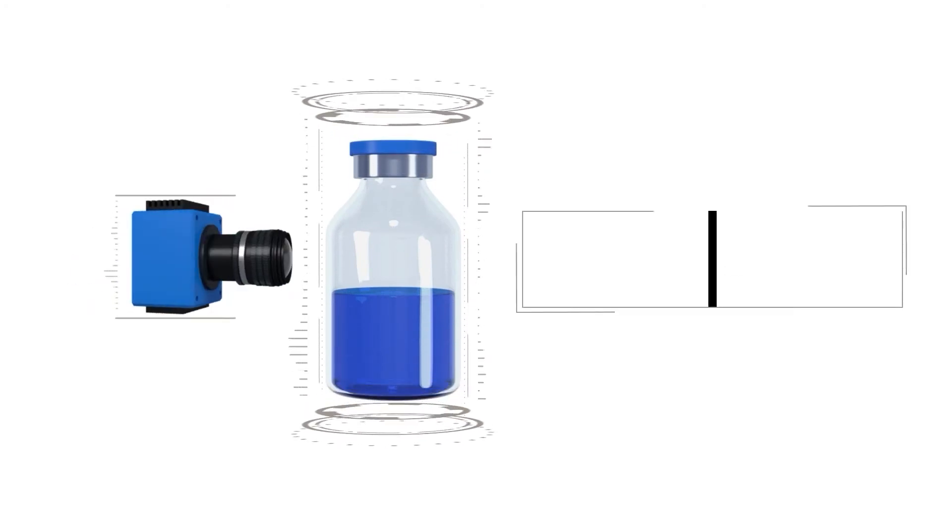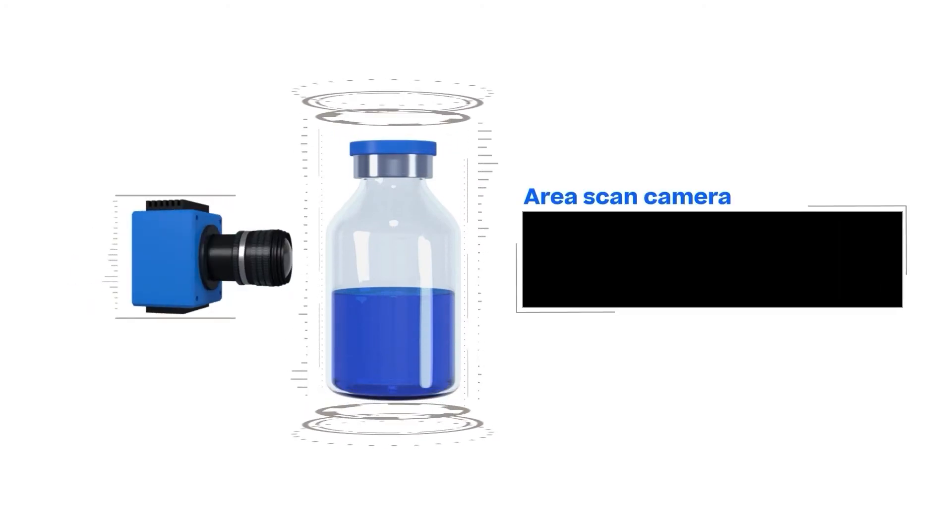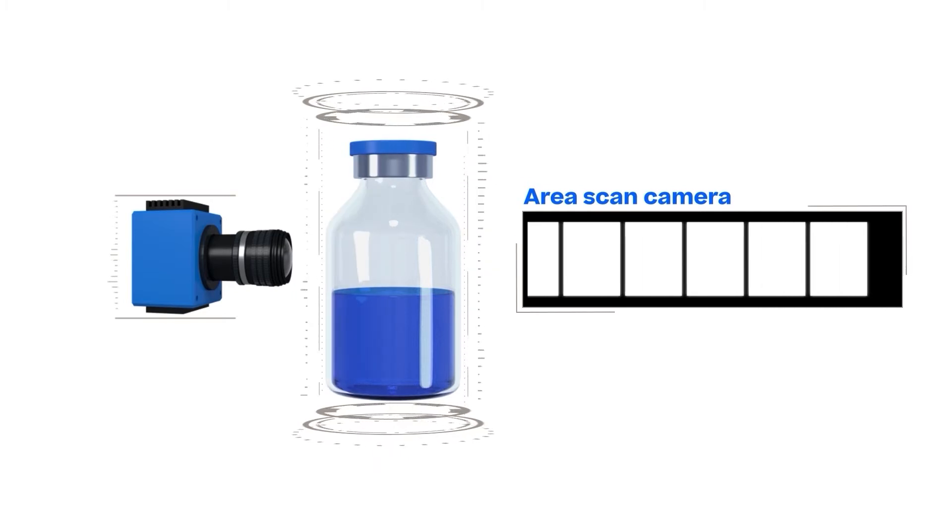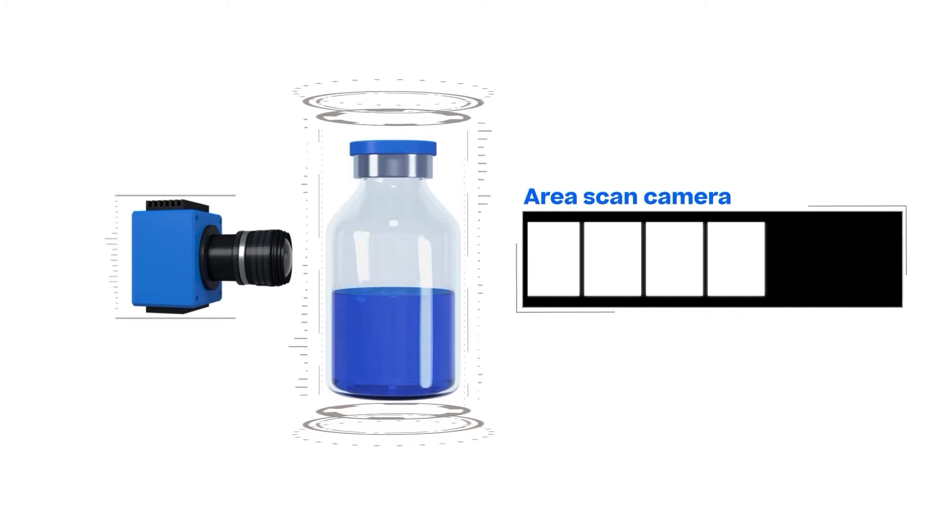The area scan camera takes several consecutive frames while the container is rotating in front of the inspection station. This is often the fastest, easiest or most efficient option.